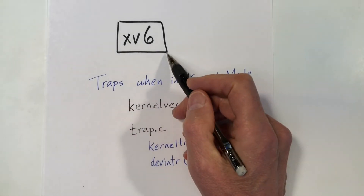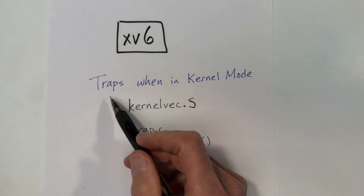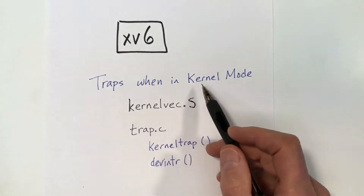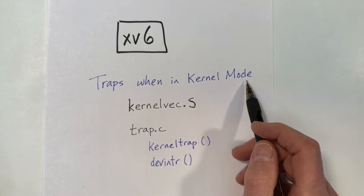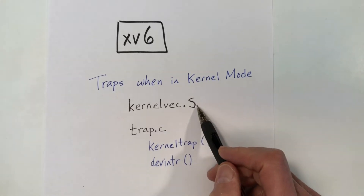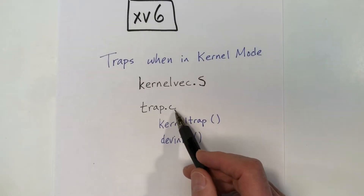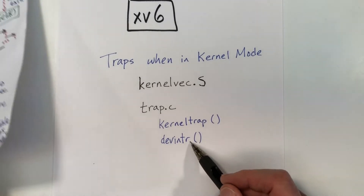This video is part of a series on the XV6 operating system kernel. In this video, I'll talk about what happens when a trap occurs while we're executing in kernel mode. Kernel mode is sometimes also called supervisor mode. I'll look at the assembly code in the file kernelvec.s, and I will look at the code in the file trap.c, and in particular kernel trap and device interrupt.